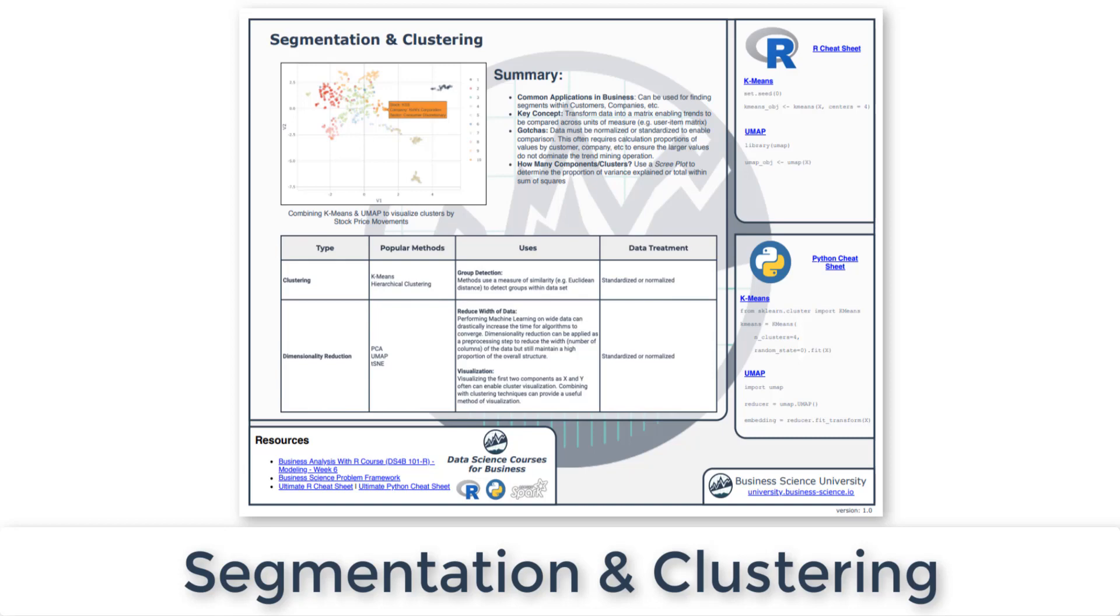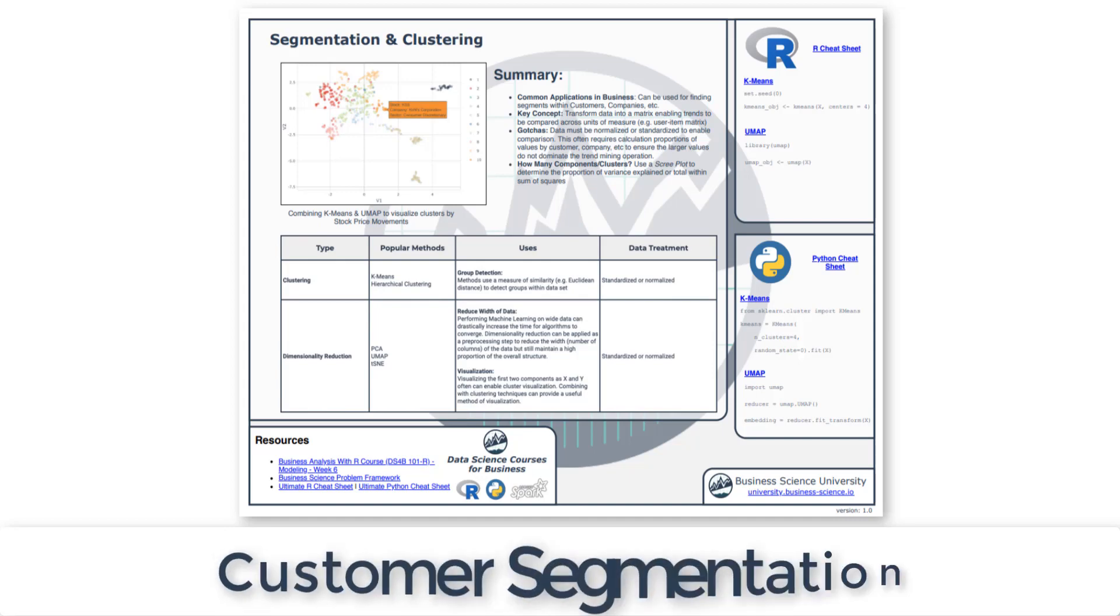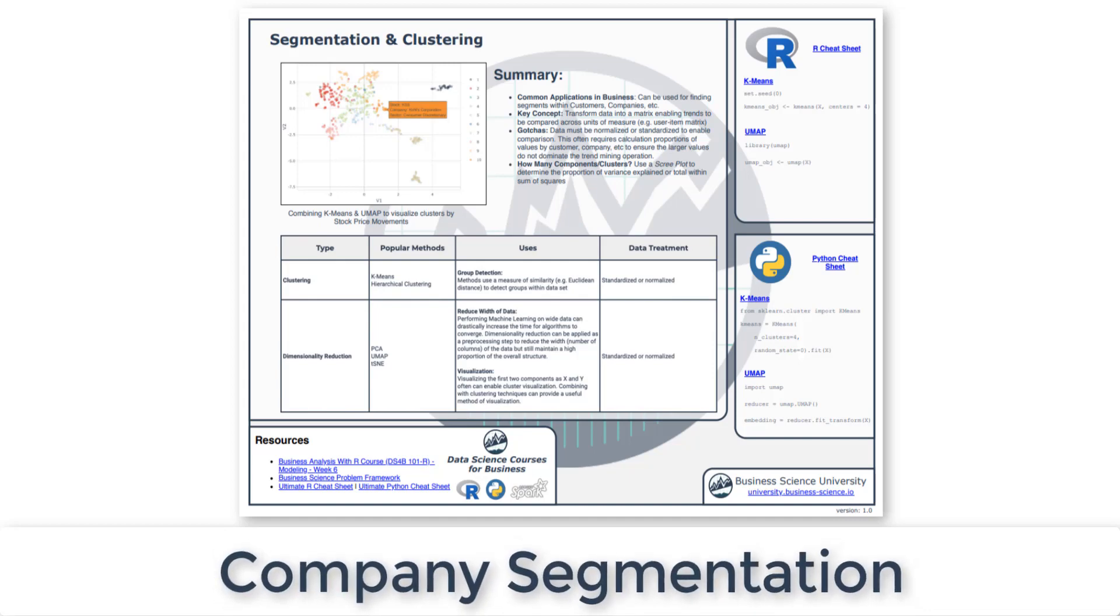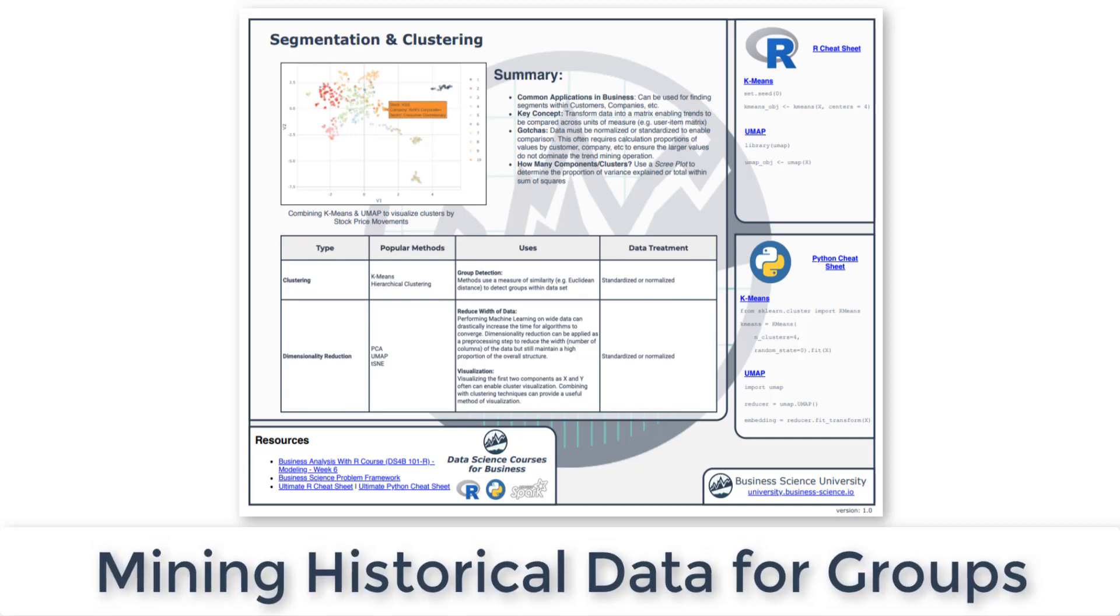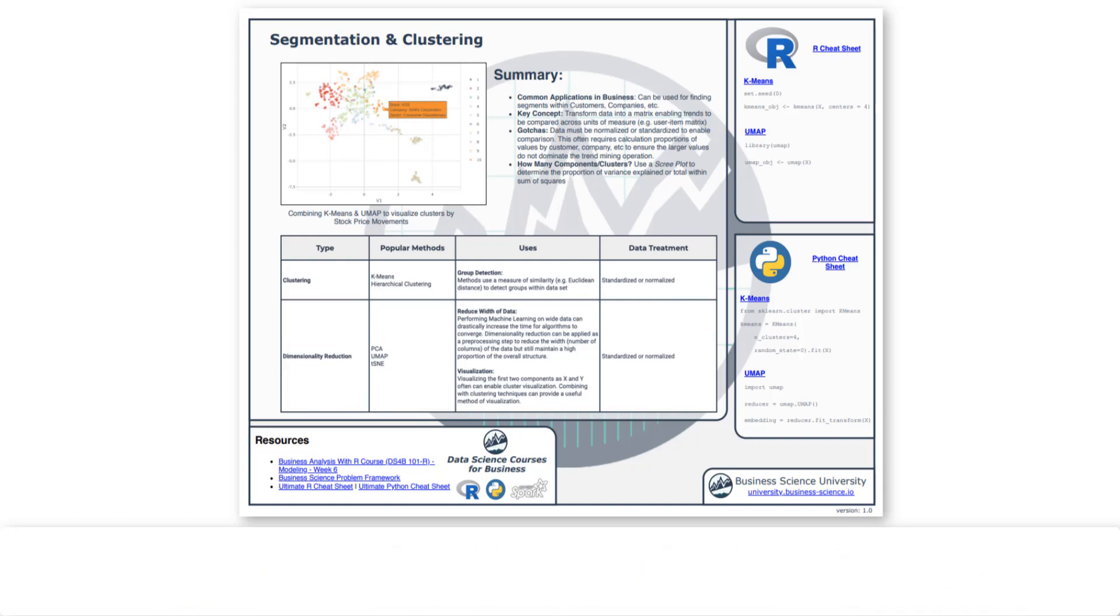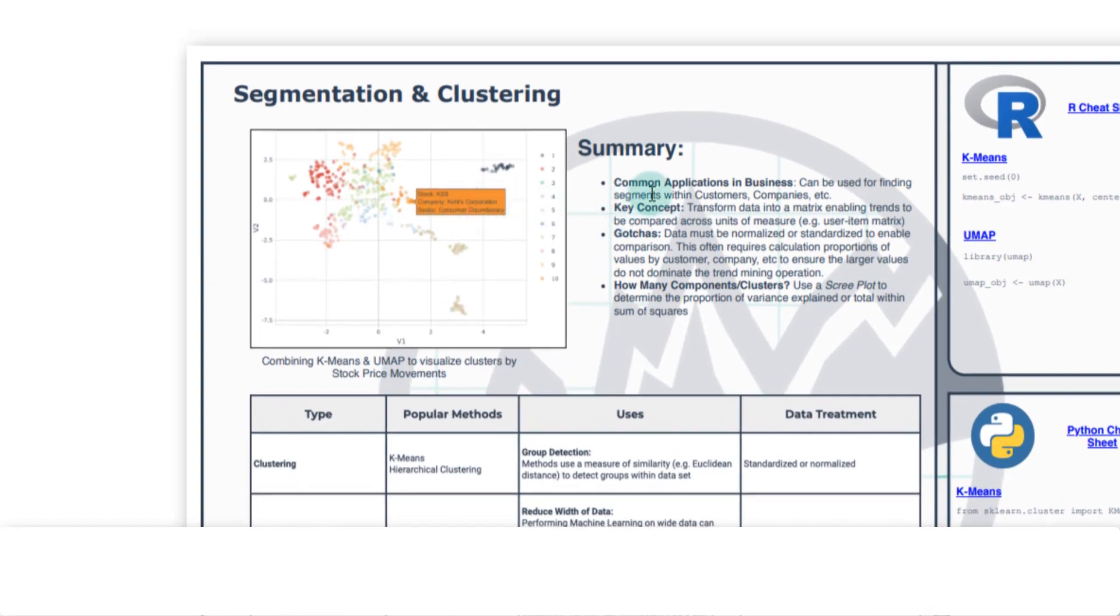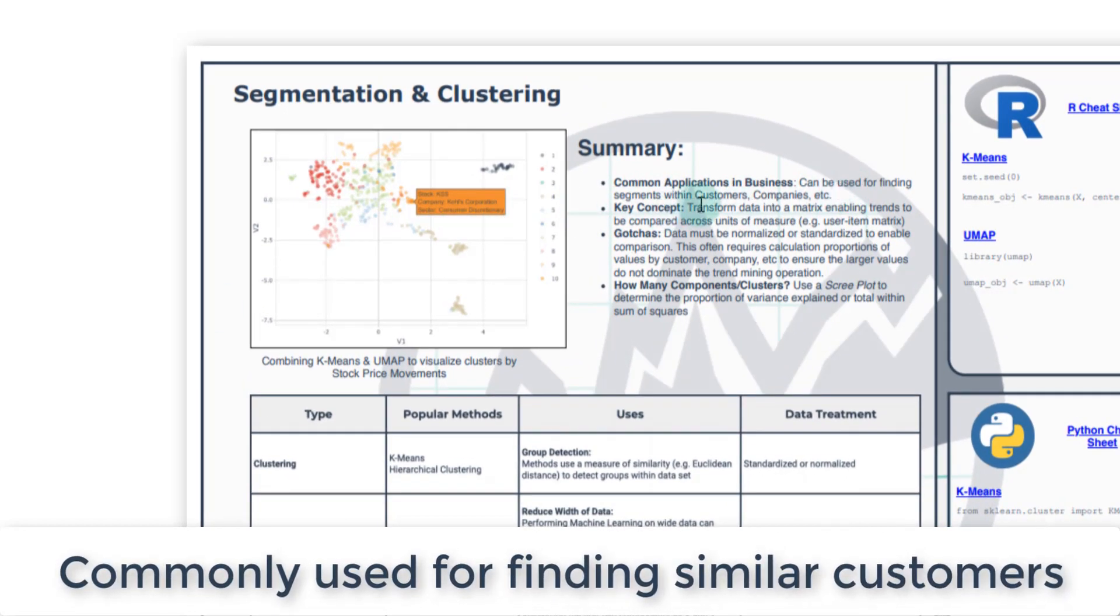Often the goal is to understand customer segments - which customers are related to each other or which companies are related to each other. This concept comes up very frequently and it's called clustering or segmentation. It's basically trying to figure out which groups of people often act the same. Common business applications include finding segments within customers and companies. In this course you'll actually do both - you'll see customers and then we'll actually do it for companies using their stock prices in a nice challenge that's coming up.